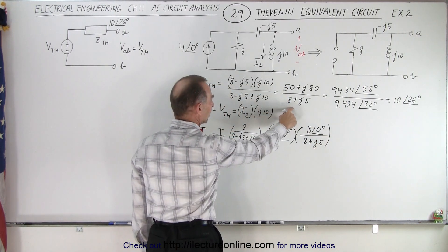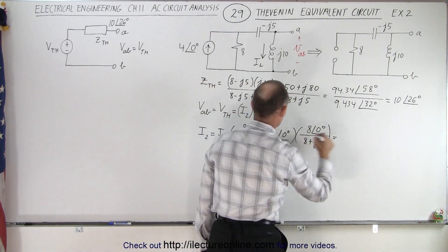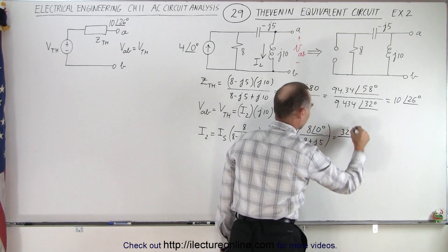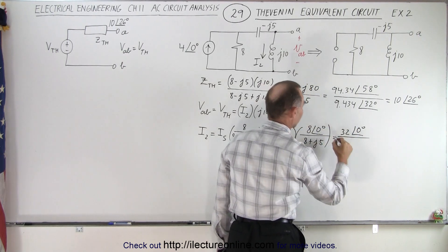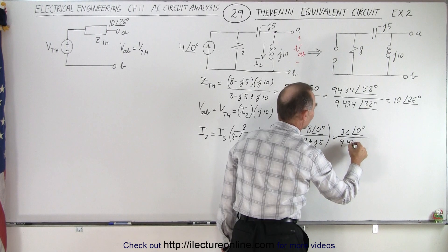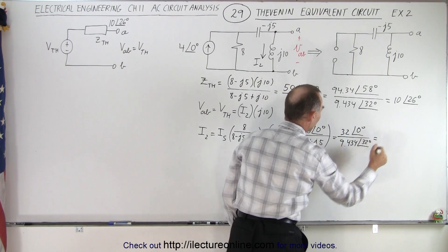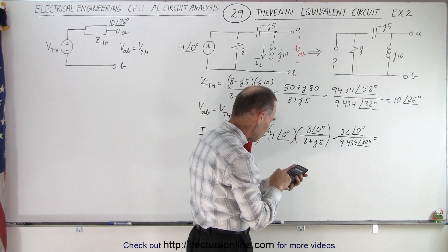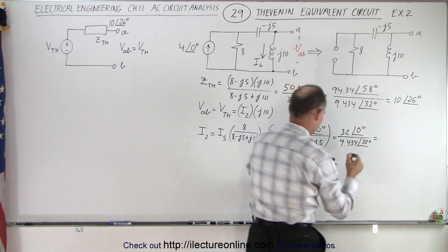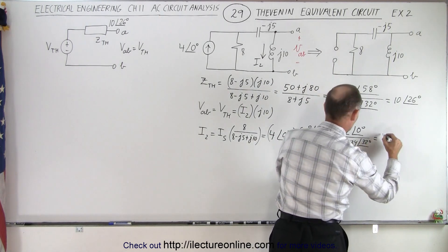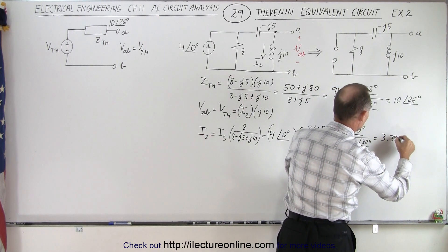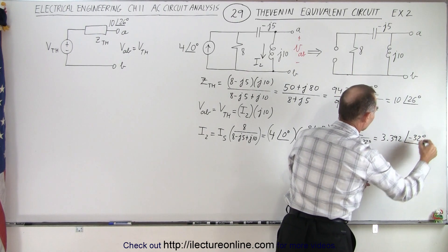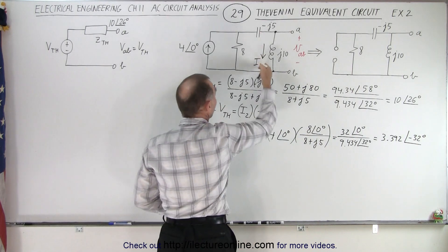So this is I of the source, which is 4∠0°, multiplied by 8∠0°, divided by — over here we have 8 + j5, and we have that denominator already, so it's the same. This gives us 4 times 8 which is 32∠0°, divided by 9.434∠32°, which gives us a current of 3.392∠−32°. So now we have I2, the current through the inductor.